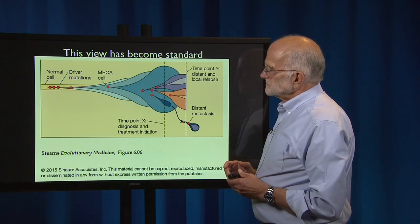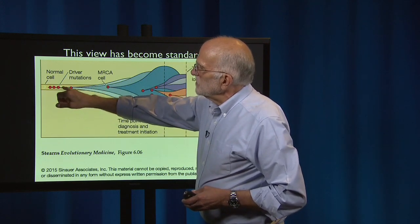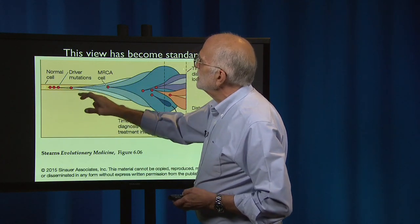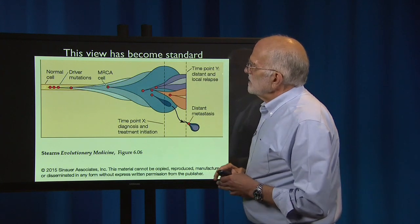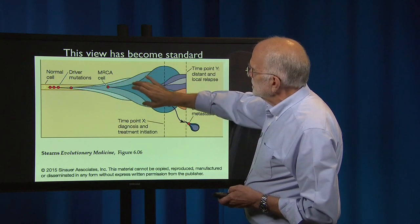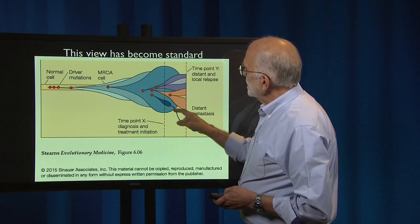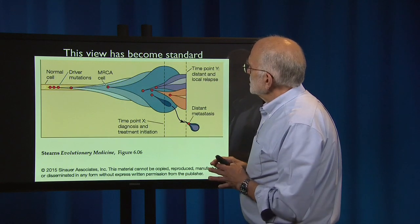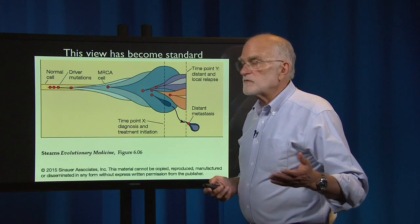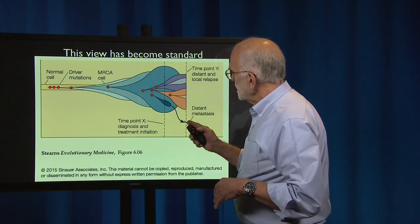This view has now become standard. Normal cells acquire driver mutations — viewed as causal in the spread of cancer — and it takes a sequence of them until a most recent common ancestor cell expands and its clonal lineage takes over. Out of this expanded clone come some cells that can form distant metastases. Cancer is a process of clonal evolution that requires a series of mutations, and at a certain point a mutation occurs which allows metastasis.